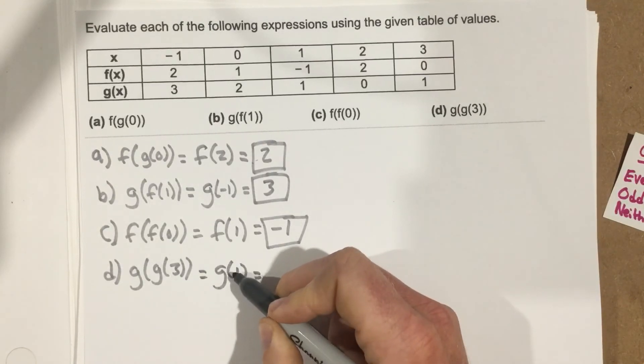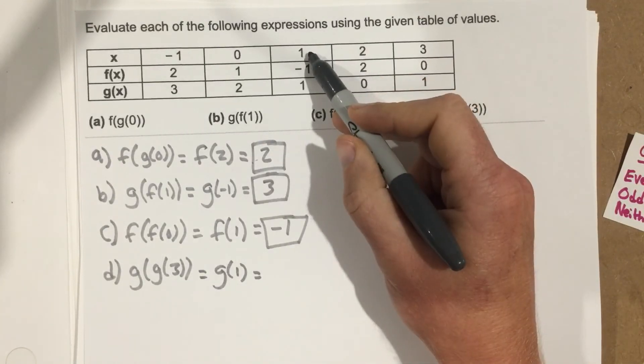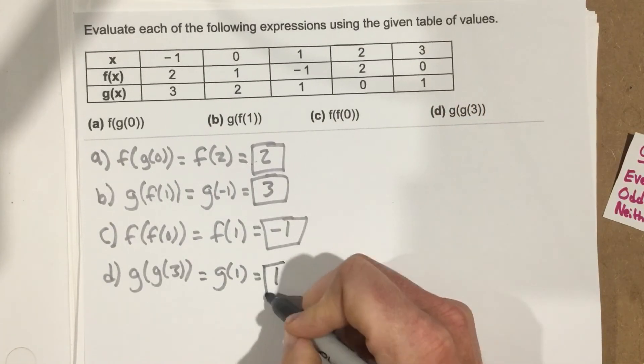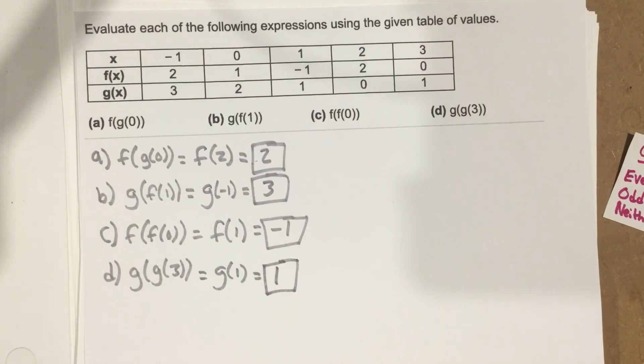And then I go to 1 for the x value, and I see that the g function outputs a 1 as well at that spot. So that's my solution. That's how we go through using a table to do composition of functions.